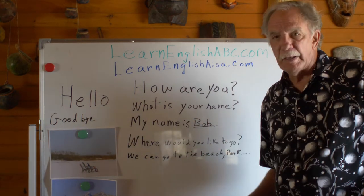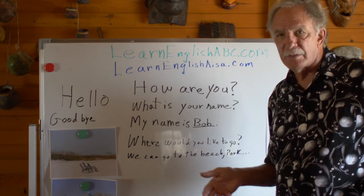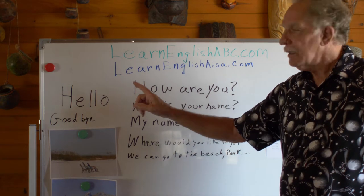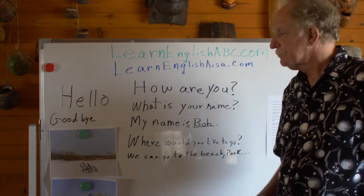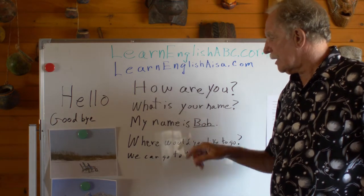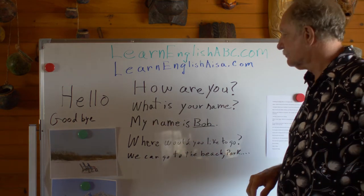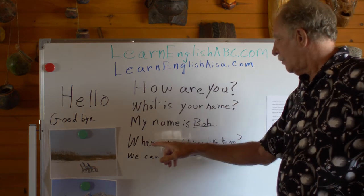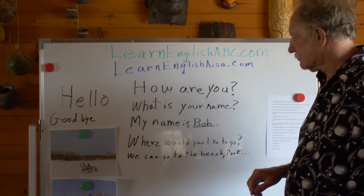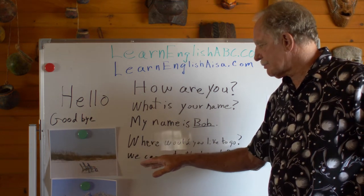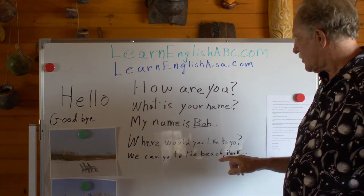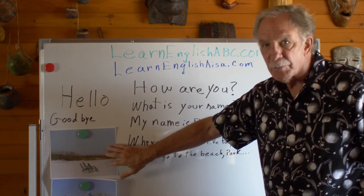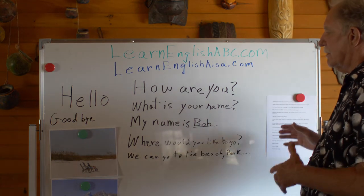In a greeting in English, you're going to say to someone: 'Hello, how are you?' or you can say 'Hello, what is your name?' or 'Hello, my name is Bob.' You can also follow up with a question like 'Where would you like to go?' and you can respond: 'We can go to the beach, the mountain, or the park.'